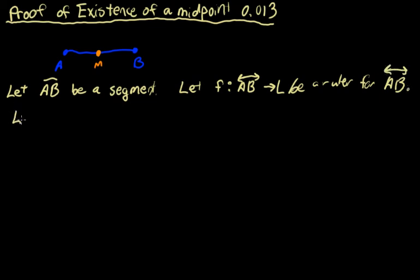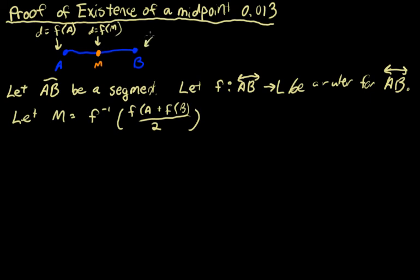Then we'll say let M equals the inverse of f of (f(A) + f(B)) / 2. By the way, these distances right here: this distance or this point equals f(A), this point or distance is equal to f(M), and this right here is f(B). And that's just how we measure the distance if you're not too familiar with that yet.